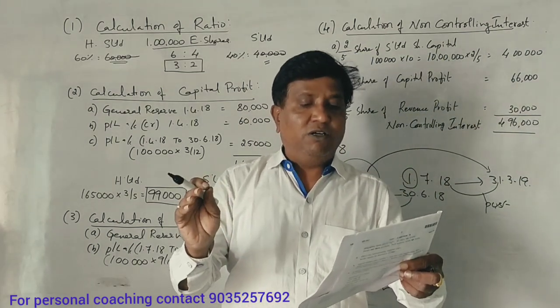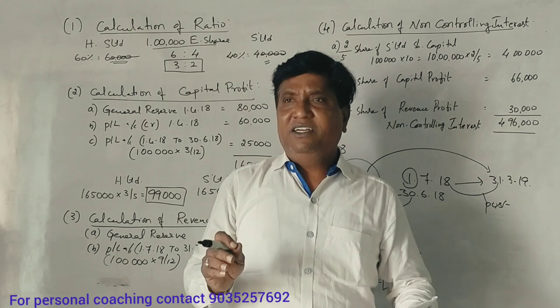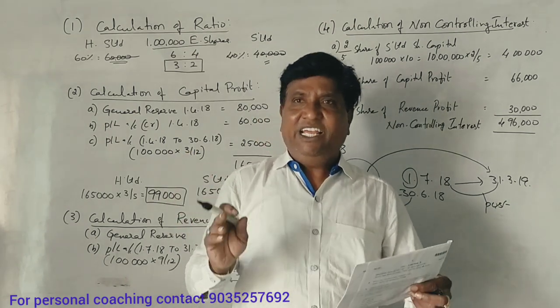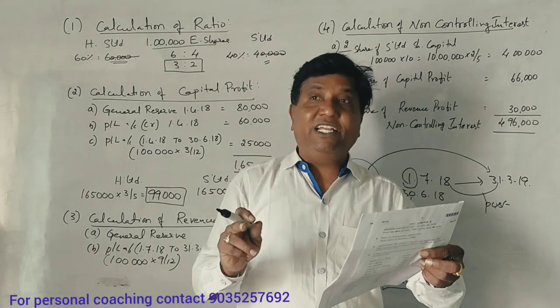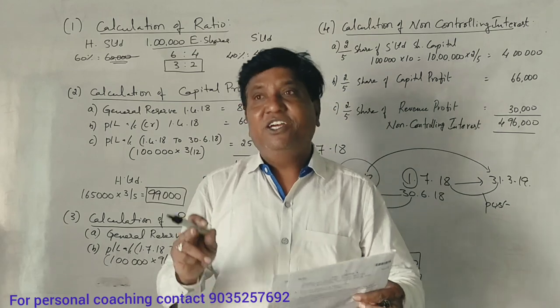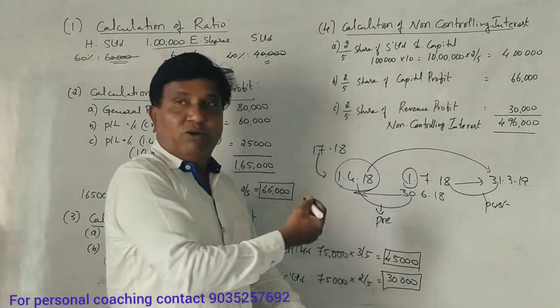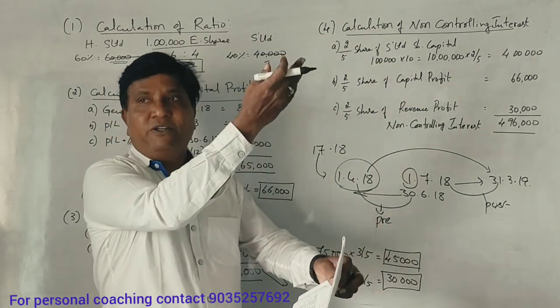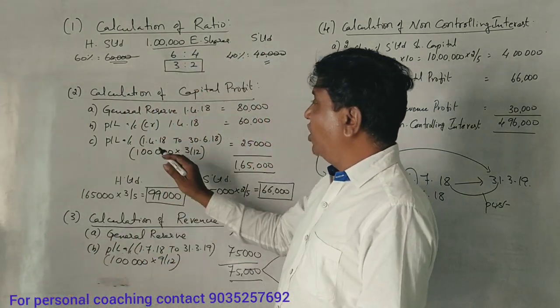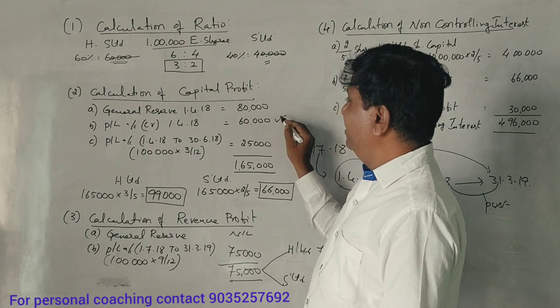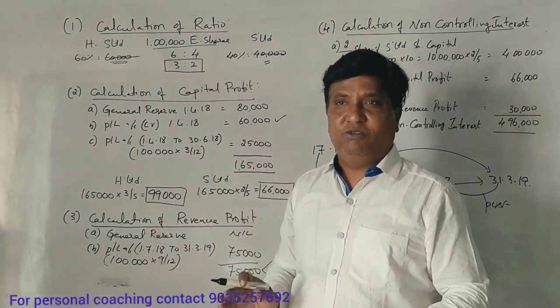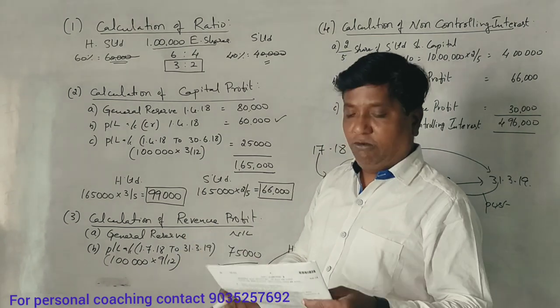Profit and loss account balance credit as of 1-4-2018. That's why the general reserve 1480 is brought down. That's why it is capital profit before the purchase date.